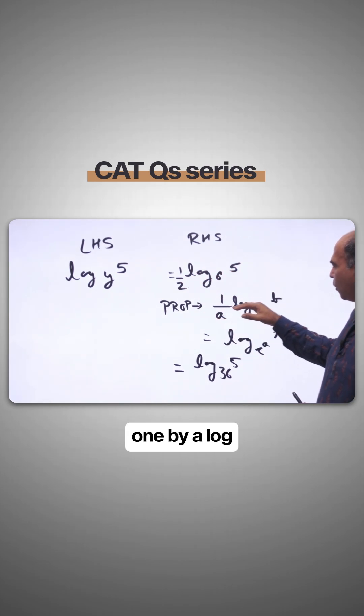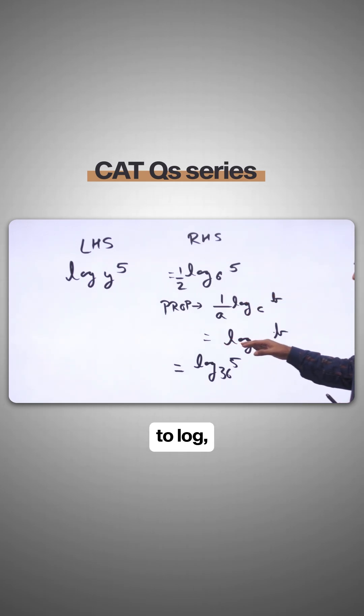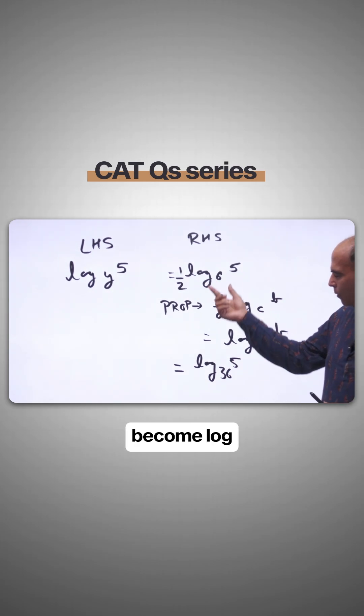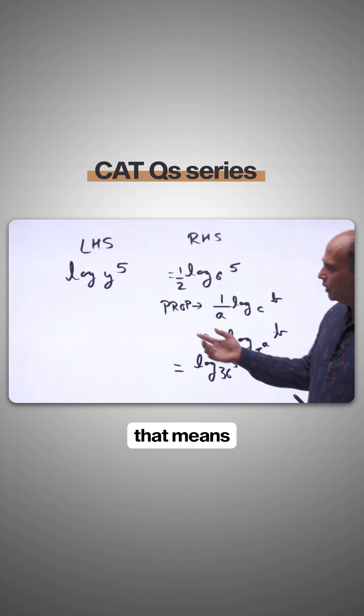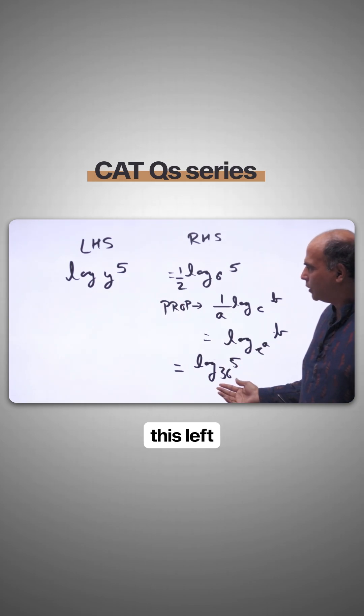Using the property that 1/a times log b base c equals log c raised to a base, this value becomes log y base 36.